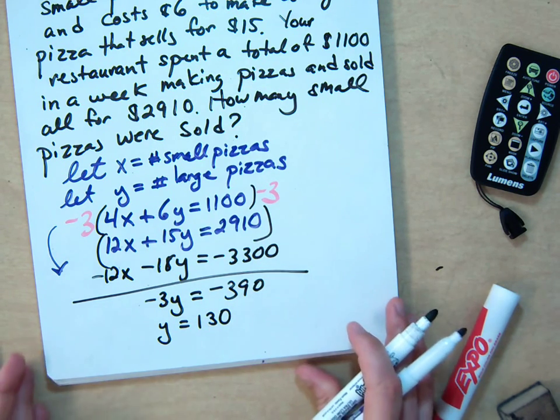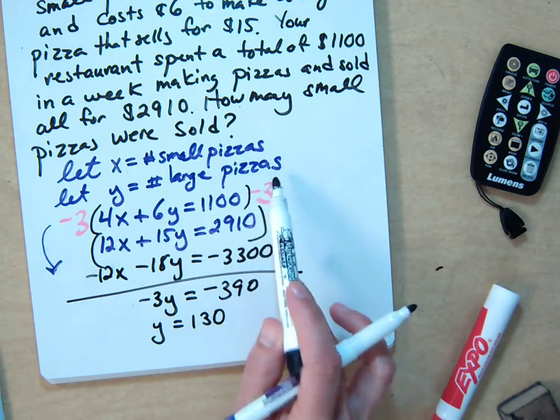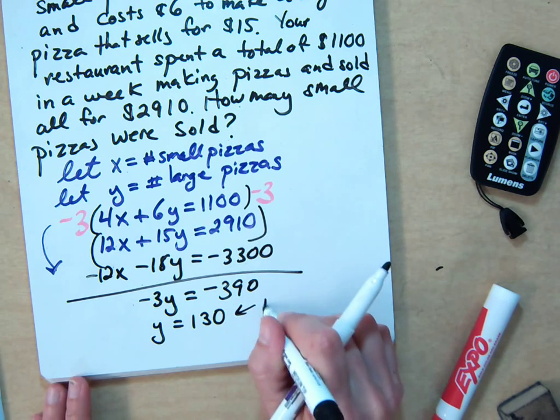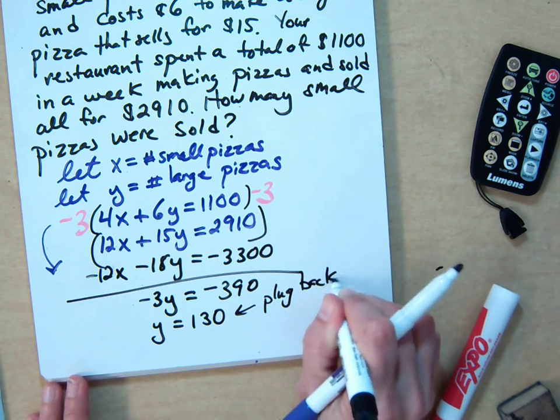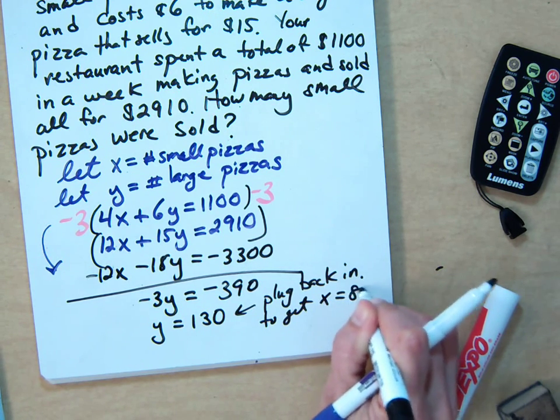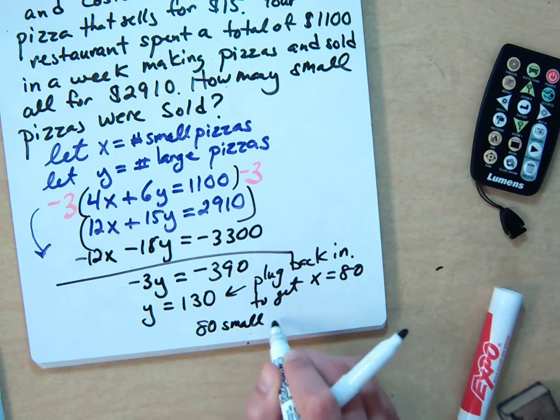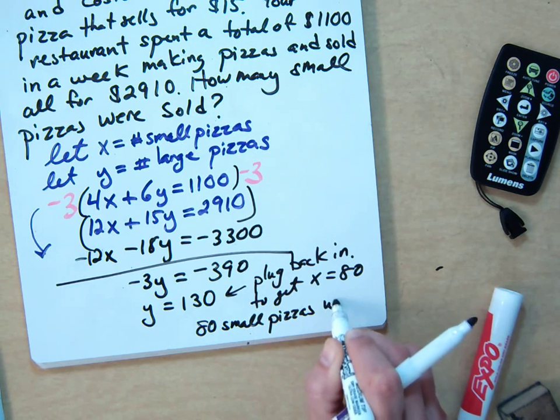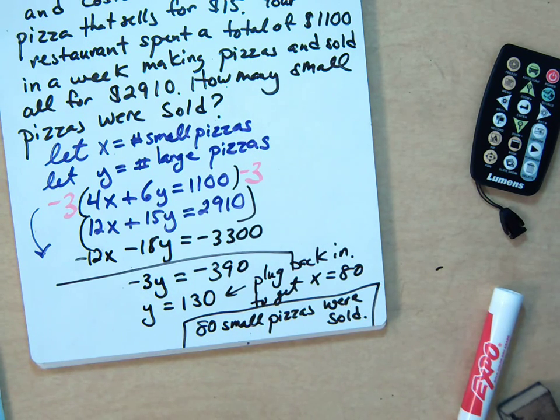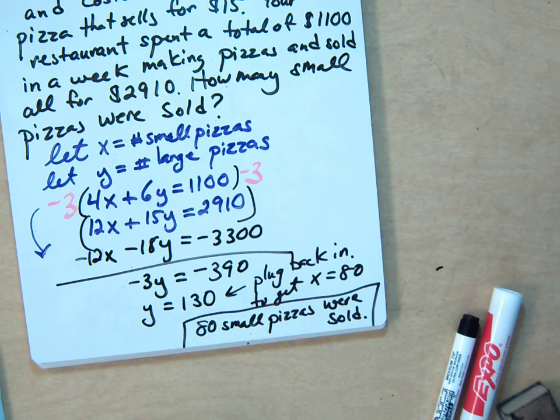So, now this is why it's so important to write your answer in a complete sentence because we didn't ask for the number of large pizzas. We asked for the number of small pizzas. So how do we get it? Yes. Plug back in. Plug back in, which we've done plenty of, to get, and you will get x equals 80. So, how many small pizzas were sold? You would say 80 small pizzas were sold. And by writing it in a complete sentence, it makes sure that you're answering the question that was asked rather than just your own little question that you had for yourself in your head.